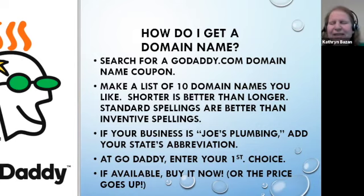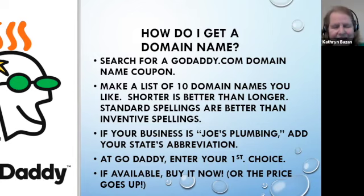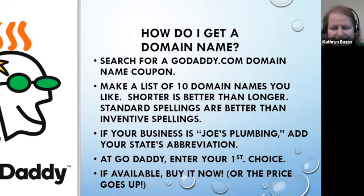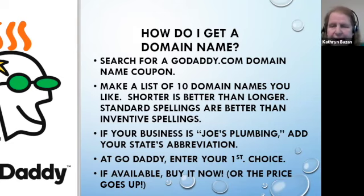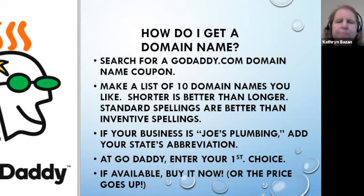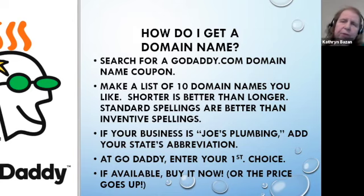Shorter is better than longer. Standard spelling is better than inventive spellings — you don't want to keep repeating the name to someone and explain that instead of ending with an S, it ends with a Z. If your business is something common like Joe's Plumbing, you can add your state abbreviation — Joe's Plumbing Oregon or Joe's Plumbing OR — to have a better chance of getting that domain name. At GoDaddy, enter your first choice with your coupon in hand and if it's available, buy it immediately — because people inside the company may see your search and buy it to raise the price.